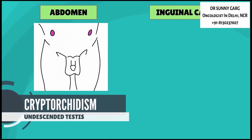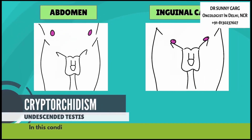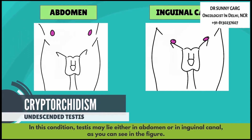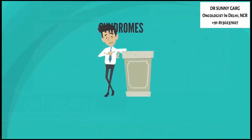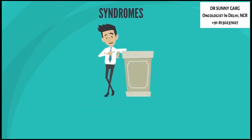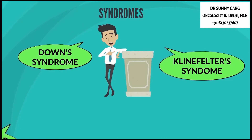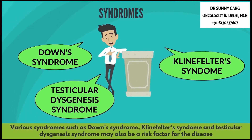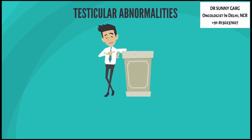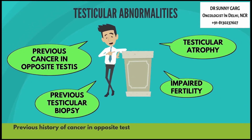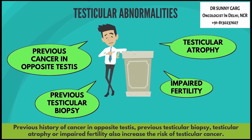In this condition, the testes may be either in the abdomen or in the inguinal canal, as you can see in the figure. Various syndromes such as Down syndrome, Klinefelter syndrome, and testicular dysgenesis syndrome may also be risk factors. Previous history of cancer in the opposite testis, testicular biopsy, testicular atrophy, or impaired fertility may also increase the risk of testicular cancer.